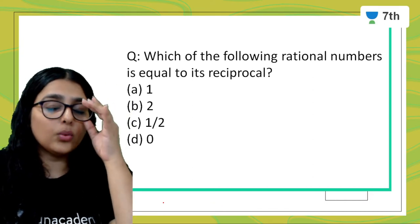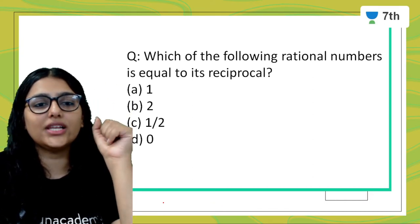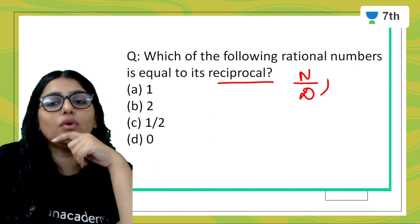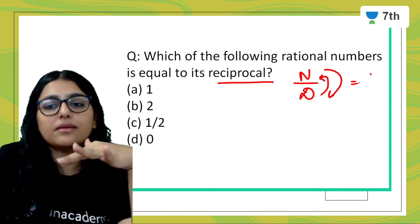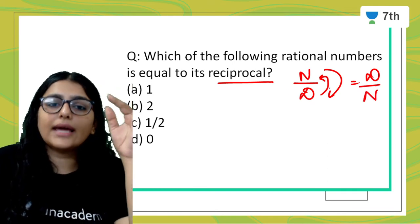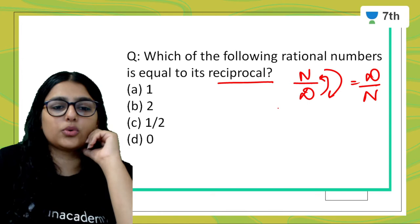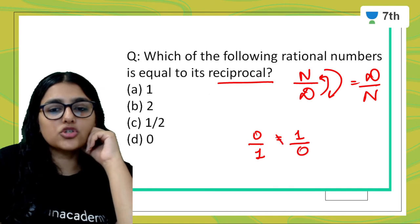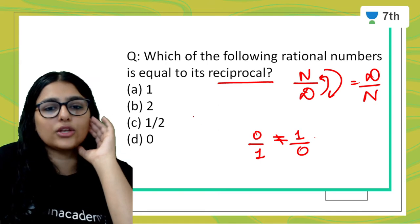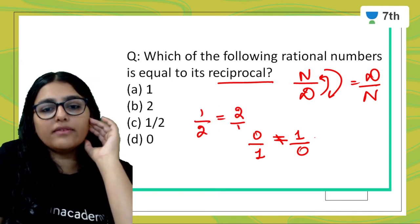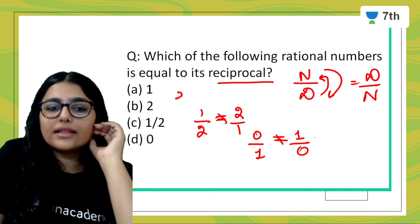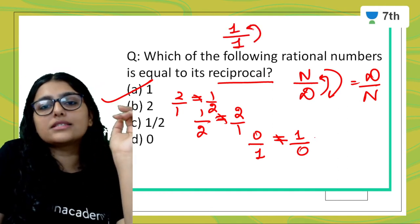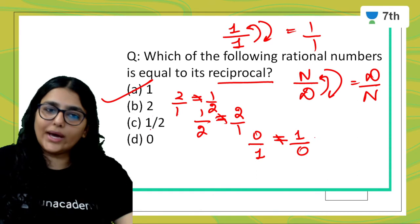One marker question: which of the following rational numbers is equal to its reciprocal? Recall that the reciprocal means numerator and denominator interchange. For 0 upon 1, its reciprocal is 1 upon 0, which is not defined, so not this one. For 1 by 2, reciprocal is 2 by 1 — not equal. For 2 by 1, reciprocal is 1 by 2 — not equal. But 1 upon 1: its reciprocal is also 1 upon 1, so option A is the correct answer.